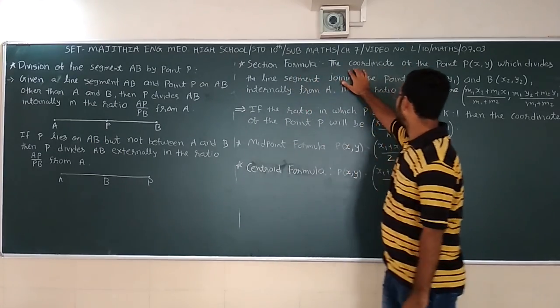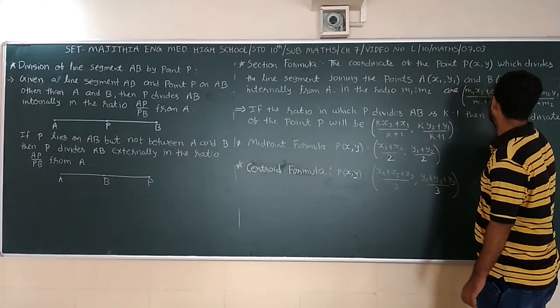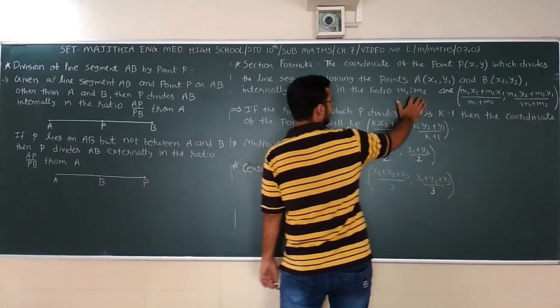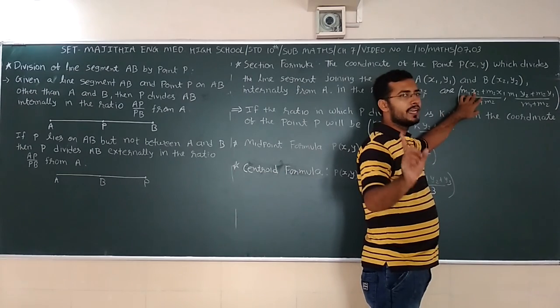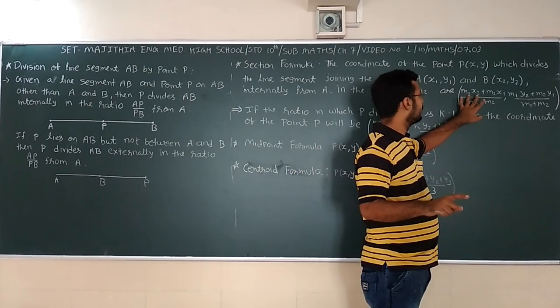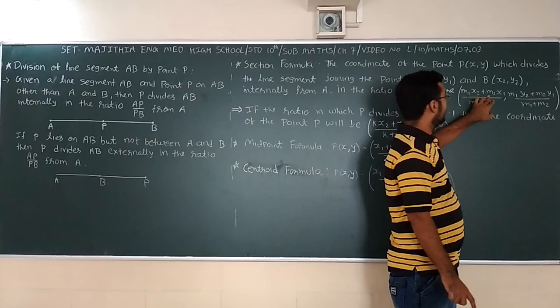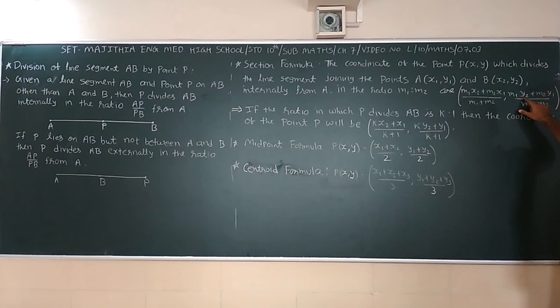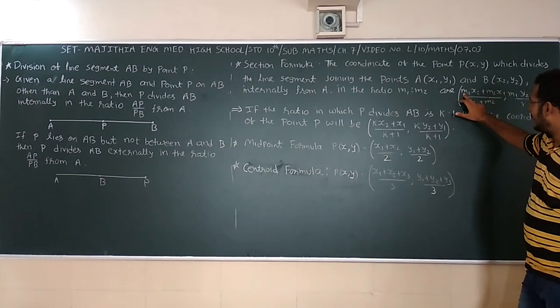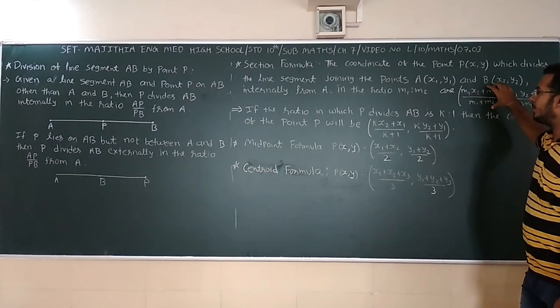Next, section formula. The coordinate of the point which divides the line segment joining the points A and B, that is X1,Y1 and X2,Y2 internally in the ratio M1:M2. So here M1X2 plus M2X1 upon M1 plus M2, and M1Y2 plus M2Y1 upon M1 plus M2. Both have the same numbers at coordinates but not same. That is your formula, section formula.